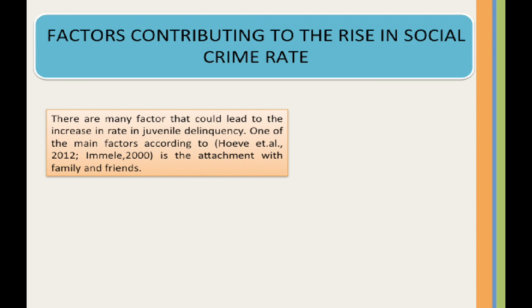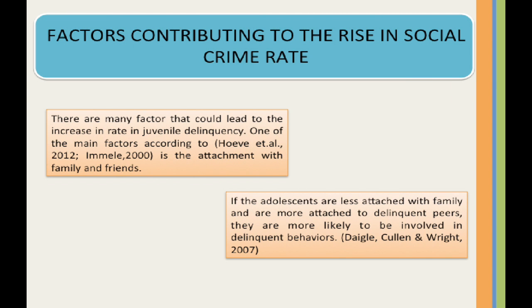One of the main factors is the attachment with family and friends. If the adolescents are less attached with family and are more attached to delinquent peers, they are more likely to be involved in delinquent behaviors.